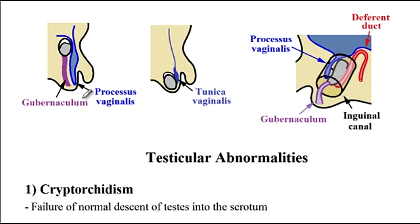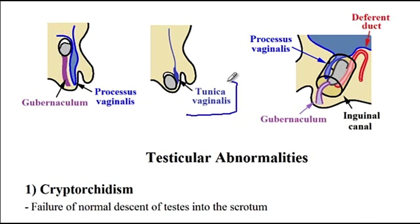Here I have a two-dimensional image which shows that the testicles will descend into the scrotum, and it's the gubernaculum that shows the path through which the testicles can descend into the scrotum. In front of the testicles there is the processus vaginalis, and after development the processus vaginalis will turn into tunica vaginalis. So tunica vaginalis is an embryonic remnant of the processus vaginalis.